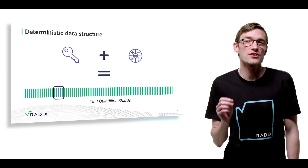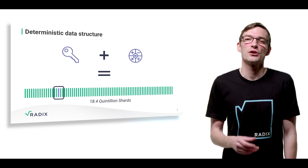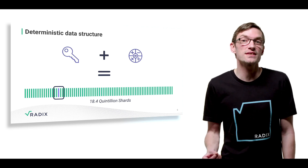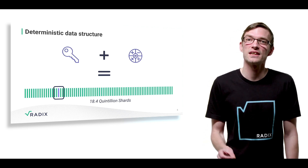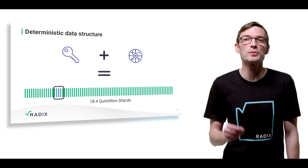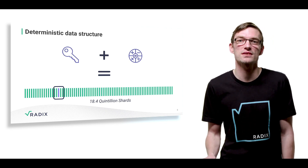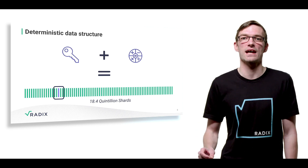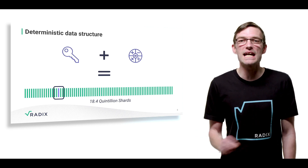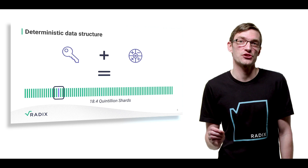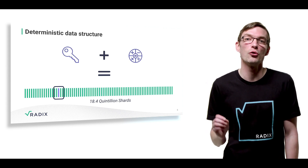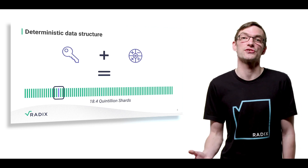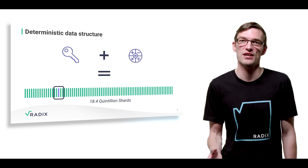All data is associated with a source address — usually the sender of a transaction or a message. The shard of an address is deterministically calculated by taking a modulo of the public key used to generate the address over the total shard space to derive the shard index. This allows anyone to simply and correctly calculate the shard index of any address or public key and locate all events — such as transactions — associated with that address or key.